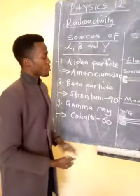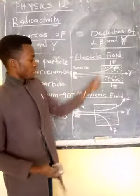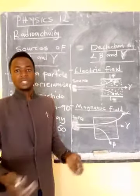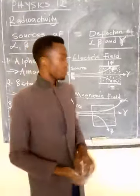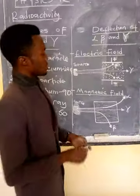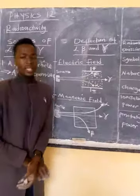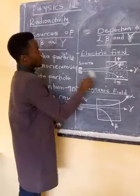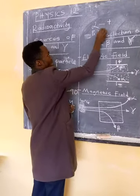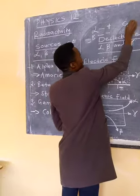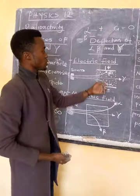From there we move to deflection of alpha, beta, and gamma in an electric field and also in a magnetic field — how these particles behave when it comes to electric or magnetic fields. We have the beta particle, the alpha particle, and the gamma ray. Alpha is positively charged, beta is negatively charged, and gamma is neutral — it has no charge.